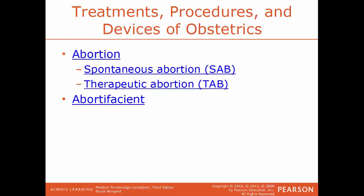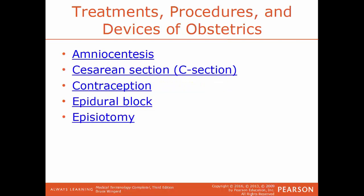Amniocentesis is the withdrawing of amniotic fluid while the mother is still pregnant, to check the developing fetus for any abnormalities or diseases. C-section, or cesarean section, is where a baby is delivered through an incision in the woman's abdomen, as opposed to a regular vaginal birth. Contraception, another term for birth control, is the deliberate use of artificial methods to prevent pregnancy.